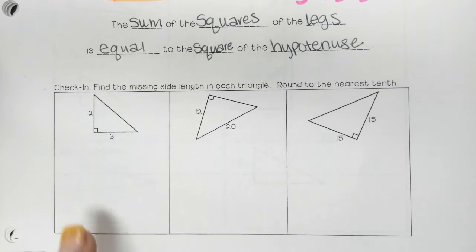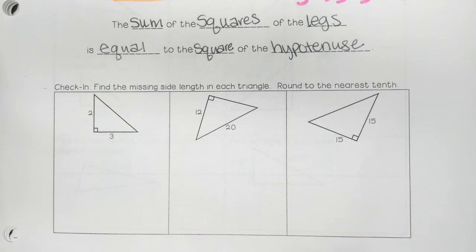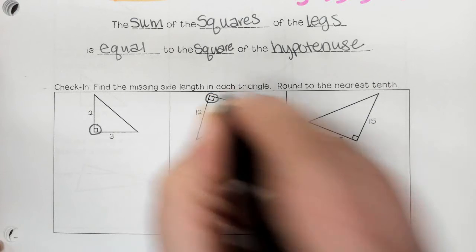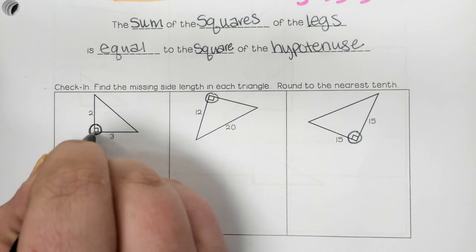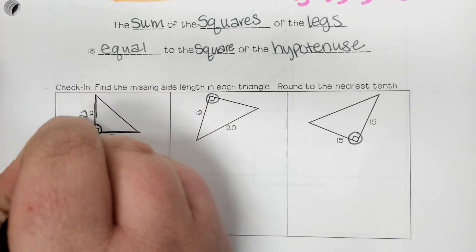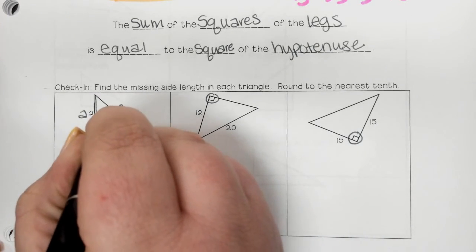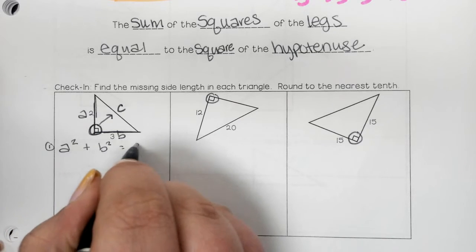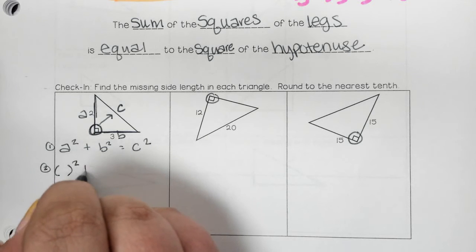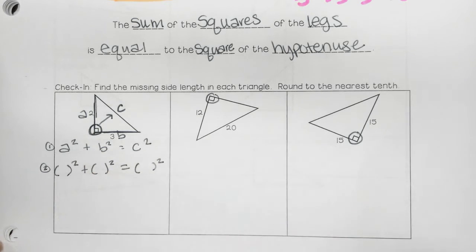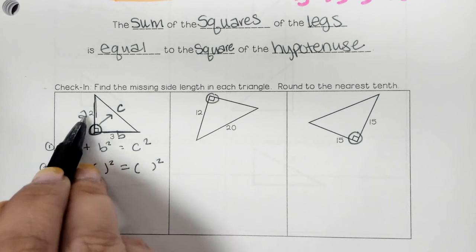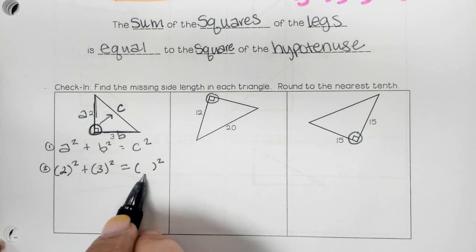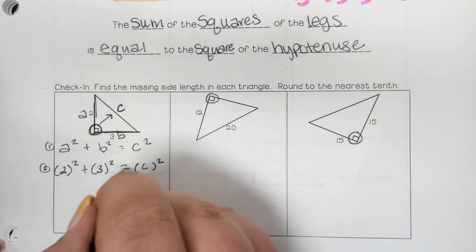In class, I had you guys try three problems on your own, and I'll just run through those relatively quickly. We want to find the missing side lengths in each triangle. We see that these are all right triangles because they have right angles labeled on them. The legs are a and b, and the hypotenuse is c, across from the right angle. First, we need to write down Pythagorean Theorem: a squared plus b squared equals c squared. Then we're going to plug in what we know.